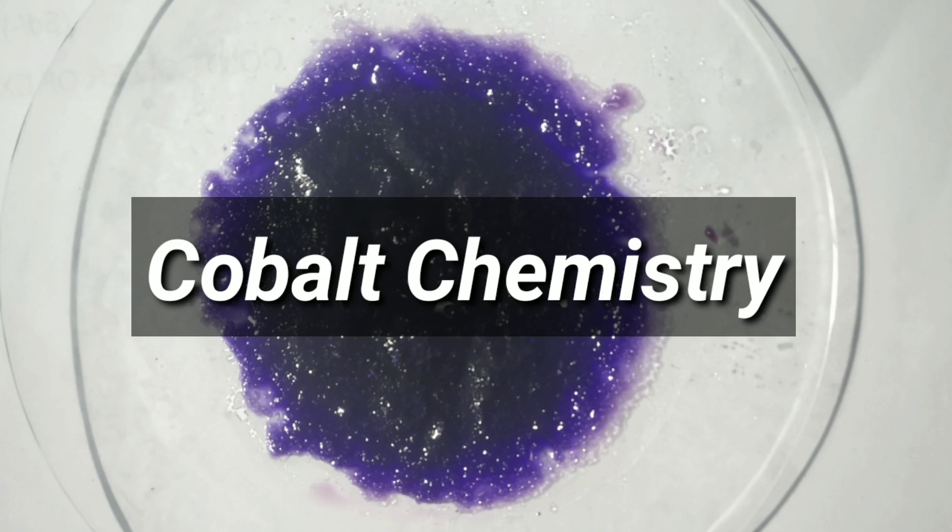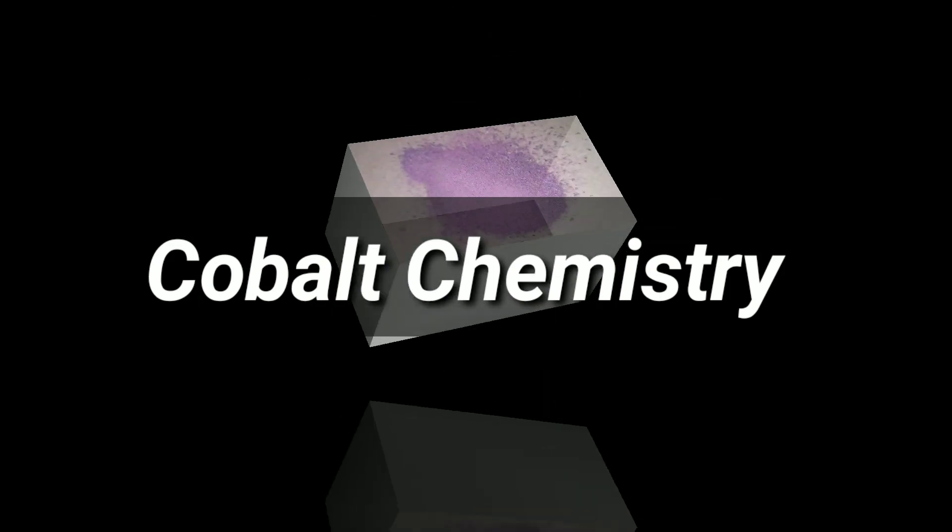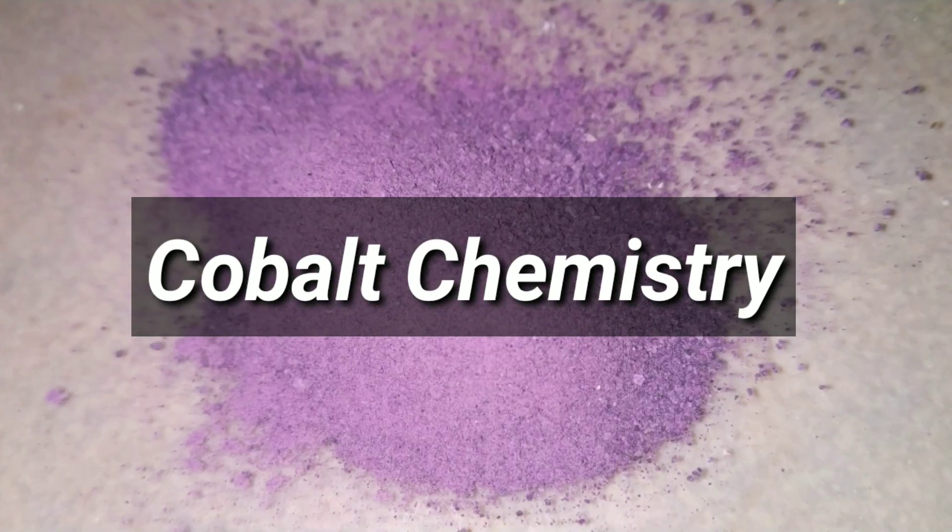The thing is I needed some cobalt 2 chloride for some experiments with cobalt 2 complex, but I had some cobalt 2 nitrate in my store. So I decided to precipitate out cobalt 2 carbonate and then make the cobalt 2 chloride.